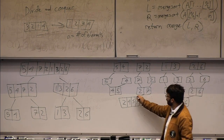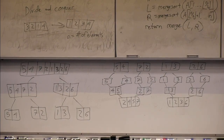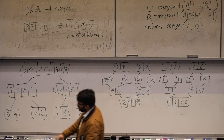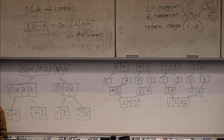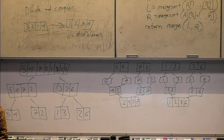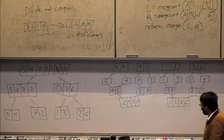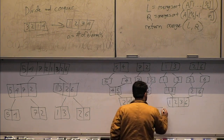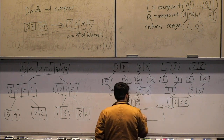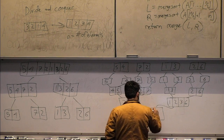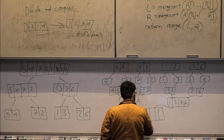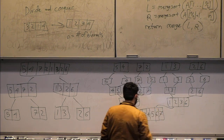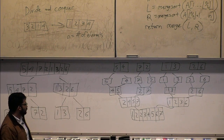Then we merge [4,5] with [2,7] to get [2,4,5,7], and [1,3] with [2,6] to get [1,2,3,6]. Finally merging those two produces the fully sorted array: 1, 2, 2, 3, 4, 5, 6, 7.